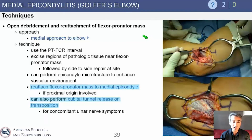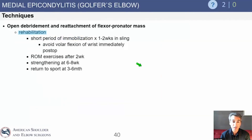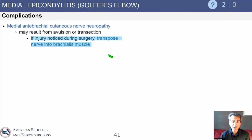This is a case of mine — an open debridement. You open up the flexor mass, create a healing response on the bone, repair the flexor mass, and debride all of that tendinotic and fibroblastic tissue. If necessary, you can also perform a cubital tunnel release or transposition to address any associated neuritis or neuropathy. Rehabilitation is standard: regain motion and strength while protecting the repair. As for complications — a favorite test question — medial antebrachial cutaneous nerve neuropathy can occur if the cutaneous nerves are cut, so it's very helpful to protect those nerves during surgery.